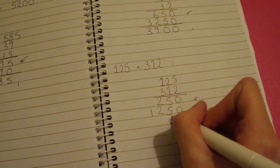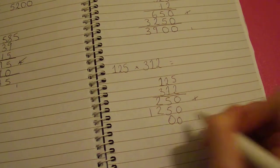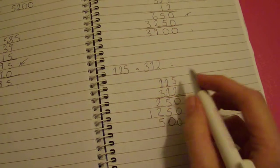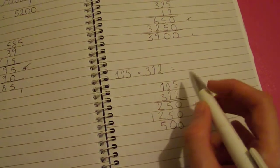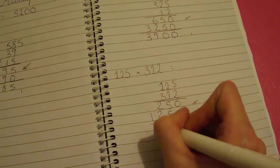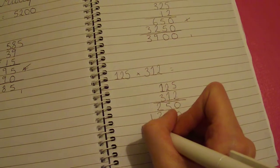3 times 5 is 15. So add your 1 and put in your 5. 3 times 2 is 6. Add 1 is 7. 3 times 1 is 3.